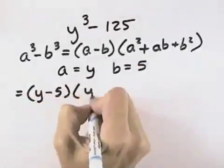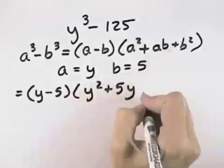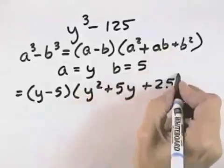Then a squared would be y squared plus ab would be 5 times y plus b squared would be 5 squared, which is 25.